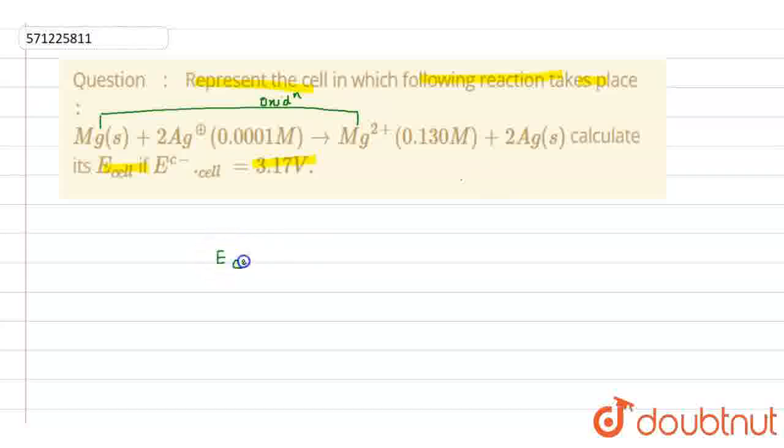So Nernst equation will be applied here, which is E cell is equal to E not cell minus 0.0591 upon N, log of concentration of anode upon cathode.